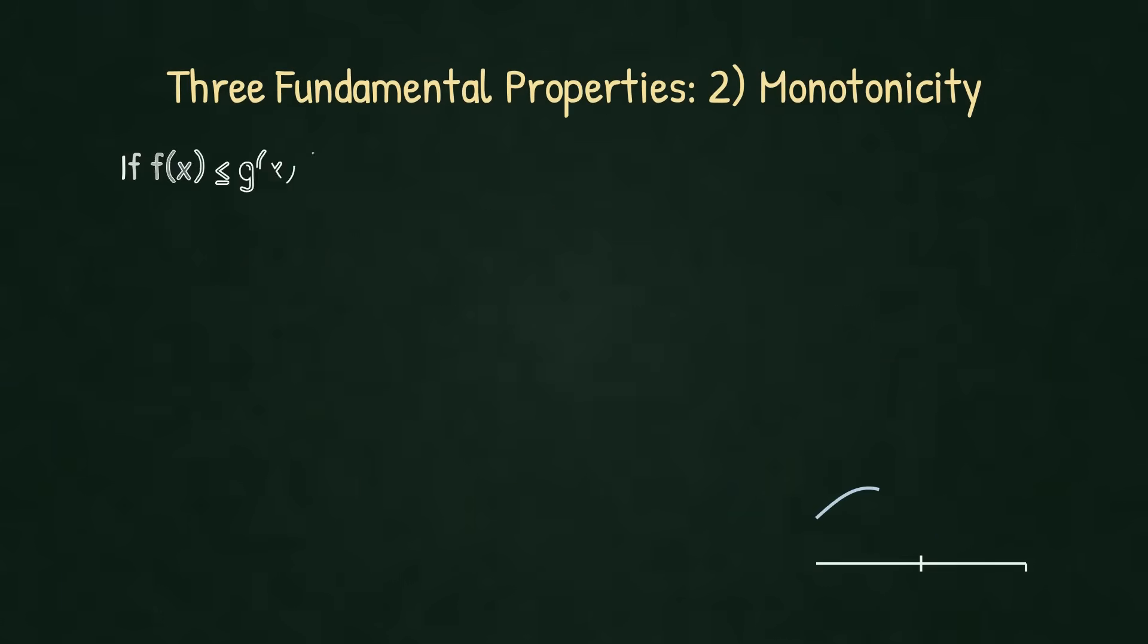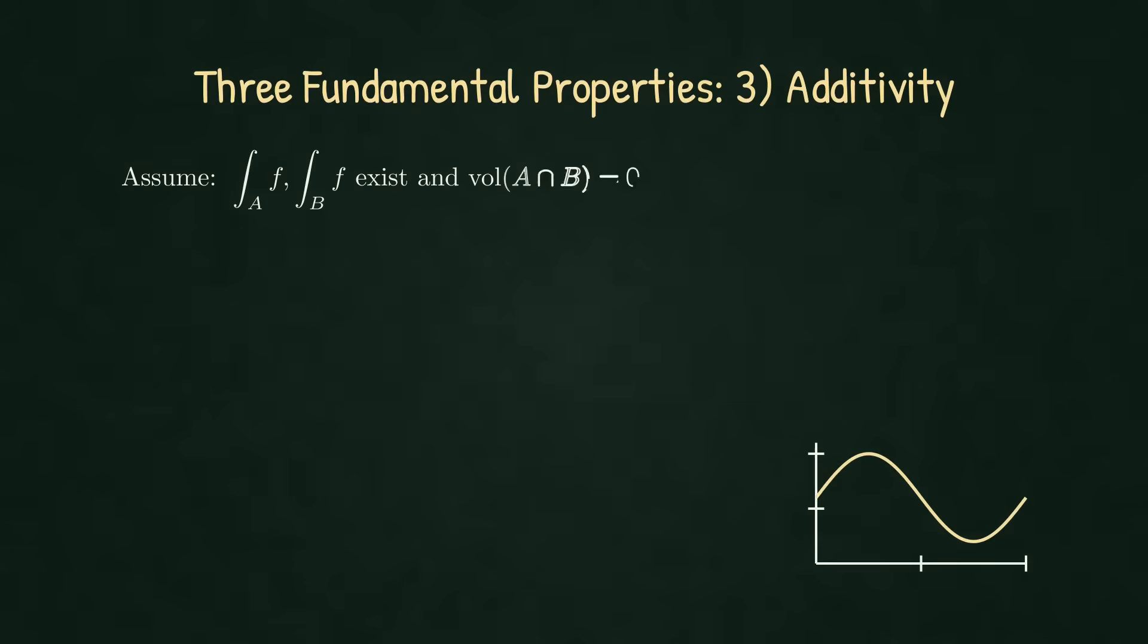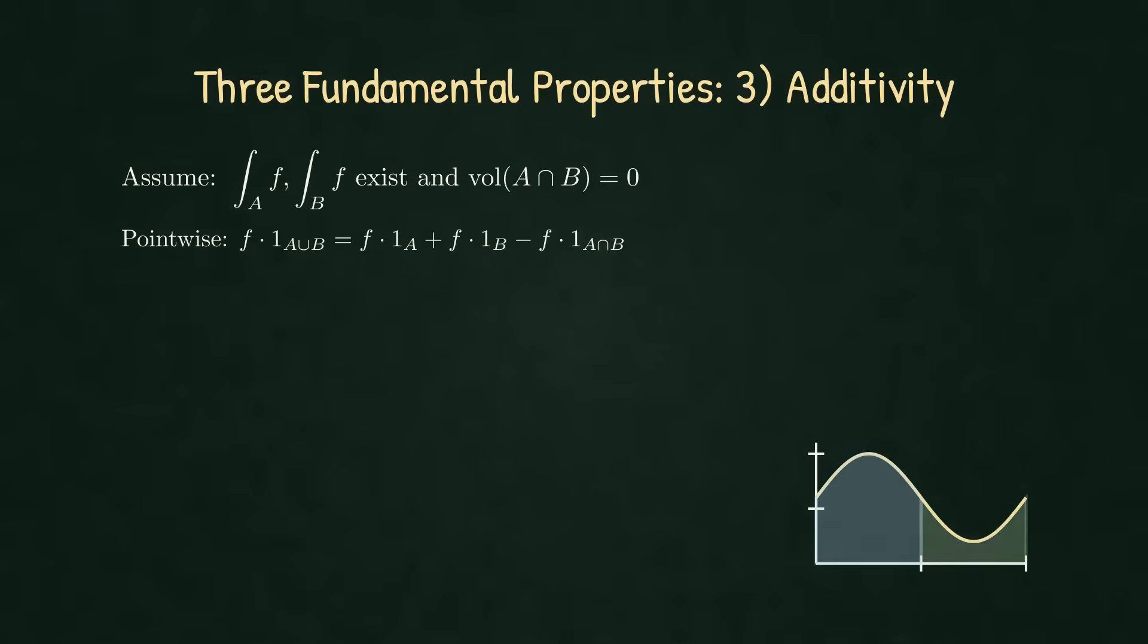Monotonicity is just as direct. If F is smaller or equal than G for all X, then each finite average obeys the same inequality and the limit preserves it.